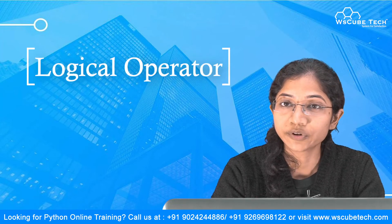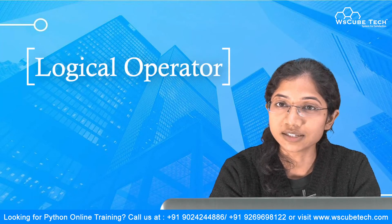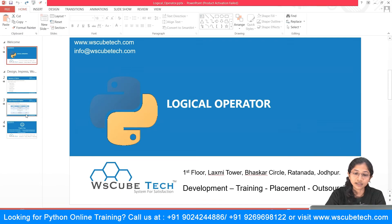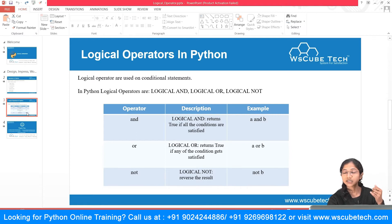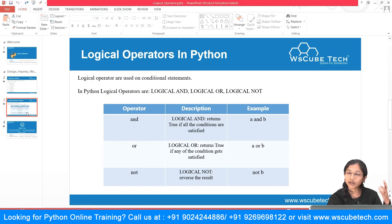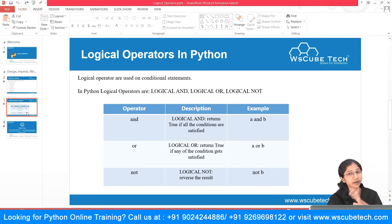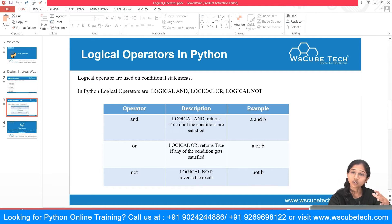Welcome back. In this video, we're going to be talking about the logical operators in Python. Basically, logical operators check for conditions. Suppose you have one condition — say, a is equal to b — and you have some values stored inside your variables. You have one condition like a is equal to b and another condition like a less than b, and you want to check for these conditions, so you make use of the logical operators.